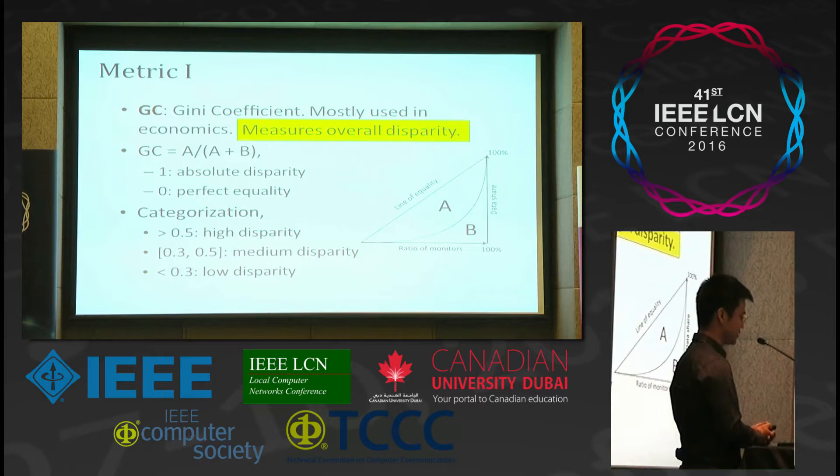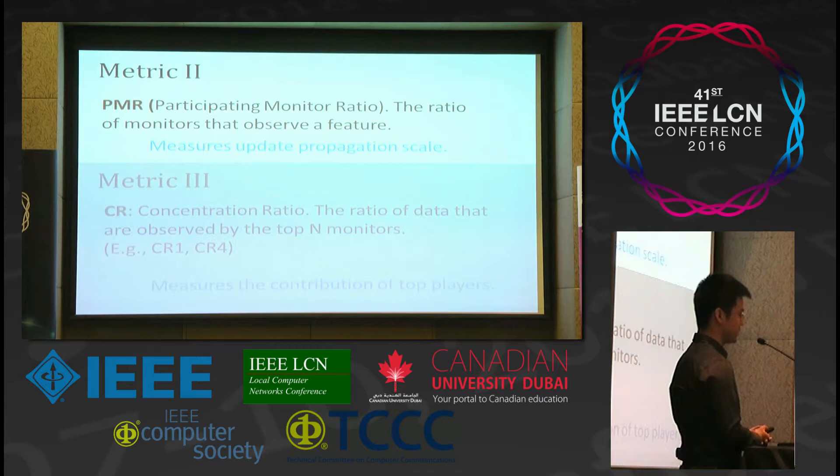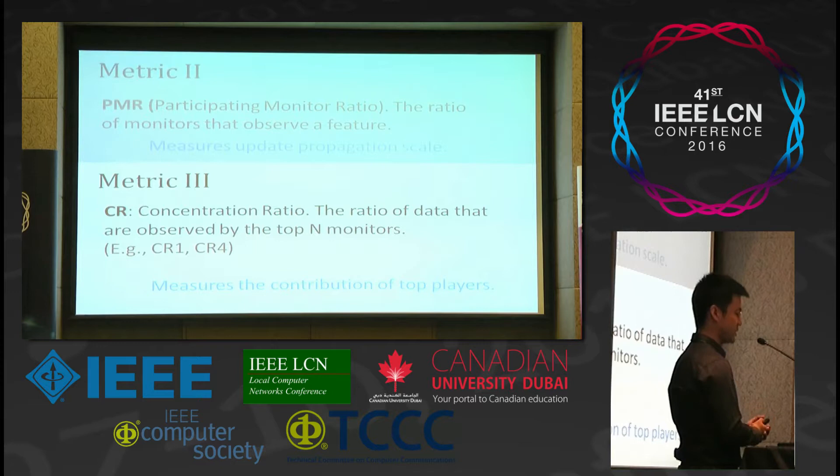The second metric is the participating monitor ratio (PMR): the ratio of monitors that observe a feature. It measures update propagation scale. The third metric is the concentration ratio: the ratio of data observed by the top N monitors. For example, CR1 and CR4 measure the top 1 and top 4 monitors. This metric measures the contribution of the top players on the internet.